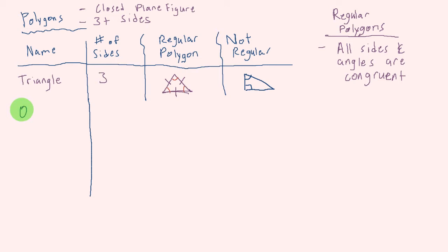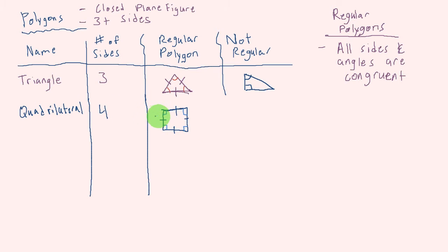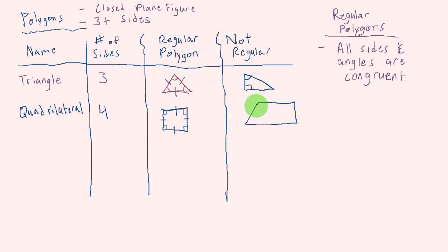The next shape we have here is a quadrilateral — Q-U-A-D — quadrilateral. Quadrilaterals have four sides. For it to be a regular polygon, it's basically a square: I need a shape that has four congruent sides and all angle measures at 90 degrees, so they're all congruent. This would be an example of a regular polygon that's a quadrilateral. But for one that's not regular, I could draw a rectangle or just any four-sided figure — that's a quadrilateral, but it's not regular.